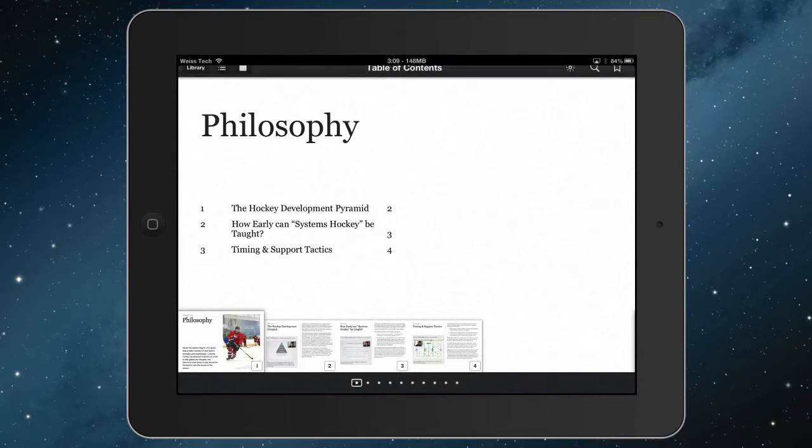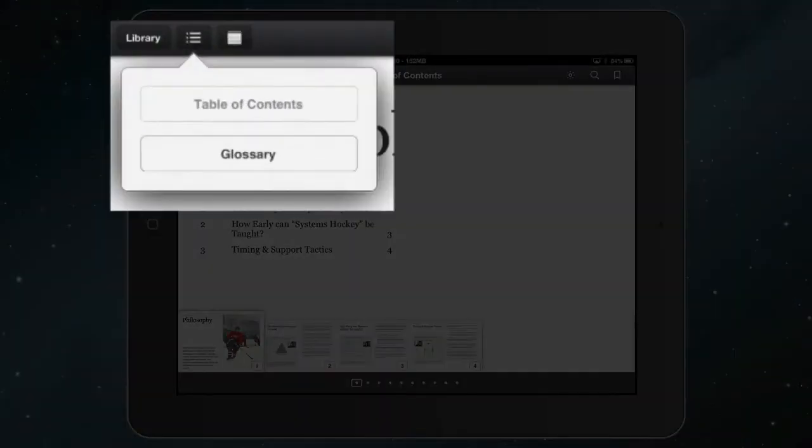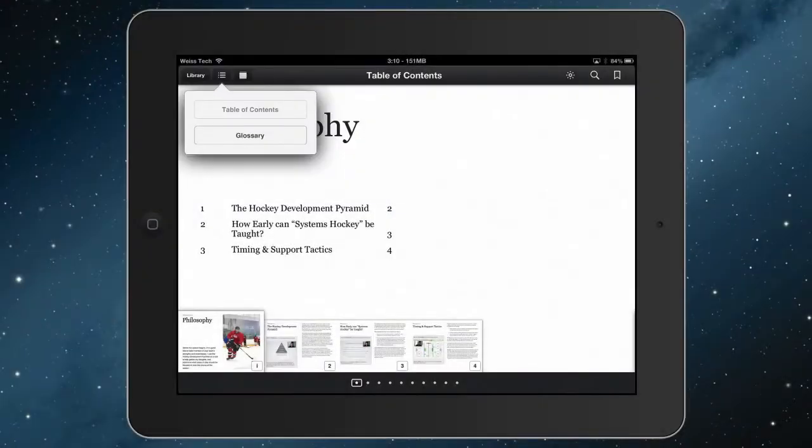If you also want to, you can access the table of contents up here. Just tap this little list thing, and you can see you can tap table of contents, which it's not tappable right now because we're already in it. And then we've also got the glossary, and I'm going to show you that in a second. But the glossary is going to be a much more usable tool in this version of the playbook than it has been in the past.